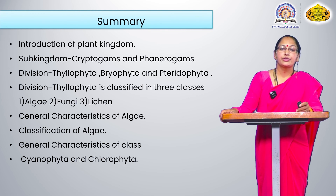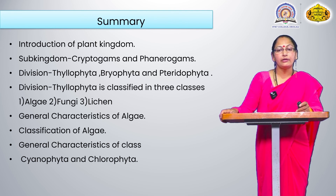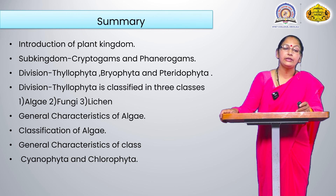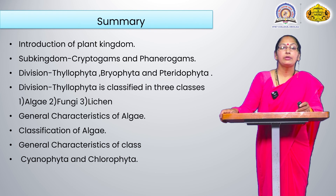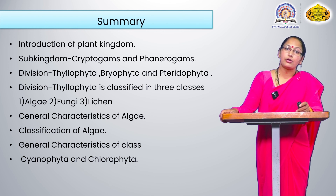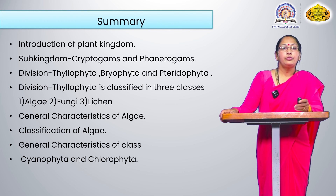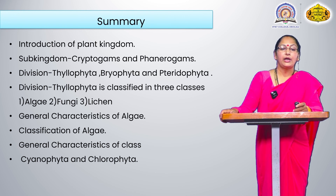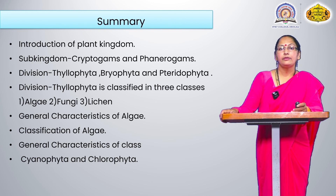In summary for today's lecture: we started with the introduction of the plant kingdom, the sub-kingdoms cryptogames and phanerogames, the division thallophyta, bryophyta, and pteridophyta. Thallophyta is classified into three classes — algae, fungi, and lichens. We covered the general characteristics of algae and the classification by G.M. Smith in 1955. We also saw two classes: Cyanophyta with its characteristics and examples, and Chlorophyta with its characteristics and examples.